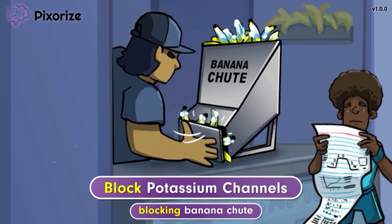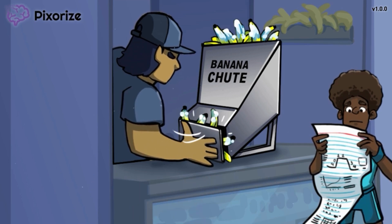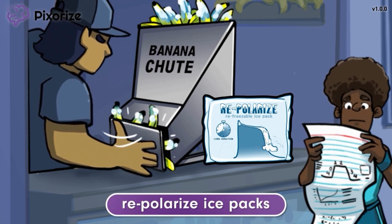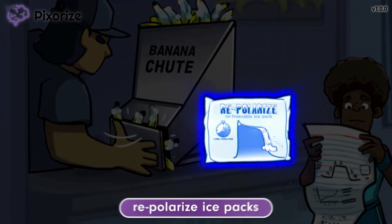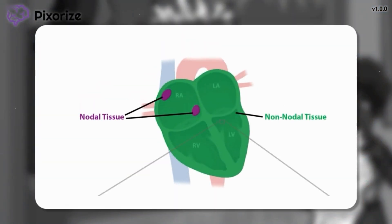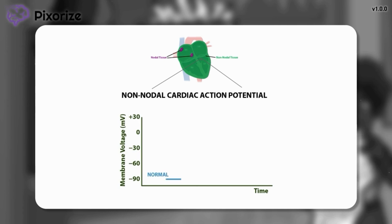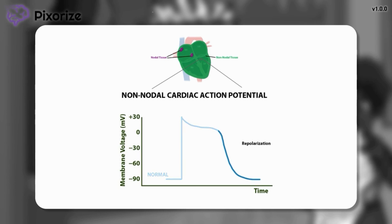As for how blocking potassium channels affects the heart, let's cover that now. The food workers use Repolarize-branded ice packs — our recurring symbol for repolarization. Zooming into a non-nodal cardiac myocyte and reviewing its action potential: the y-axis represents membrane voltage and the x-axis represents time. The normal cardiac action potential starts with a steep rise in voltage activating the cell, followed by a plateau phase, then a fall in voltage to reset the cell. Each rise corresponds with a contraction. Repolarization refers to the part of the action potential where voltage falls back to baseline, which is crucial in preparing the heart cell for the next heartbeat. Repolarization is primarily driven by potassium ions moving through potassium channels.